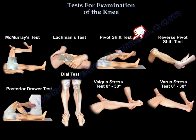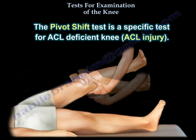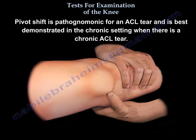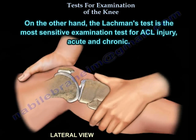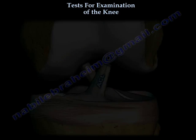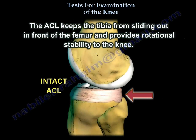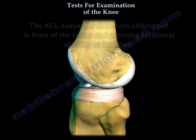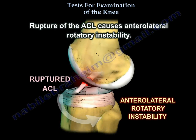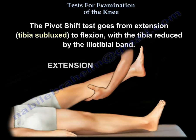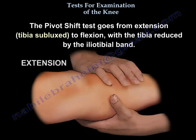The pivot shift test is a specific test for an ACL-deficient knee. The pivot shift is pathognomonic for an ACL tear and is best demonstrated in the chronic setting. The Lachman test, on the other hand, is the most sensitive test for ACL injury in both acute and chronic settings. Rupture of the ACL causes anterolateral rotatory instability. The pivot shift goes from extension — where the tibia is subluxed — to flexion, with the tibia reduced by the iliotibial band.